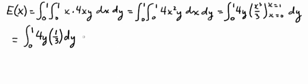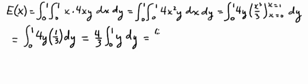And then integrating with respect to y. So we get the integral of 4 thirds, integrating from 0 to 1, y dy, which is 4 thirds integrating y. We get y squared over 2.